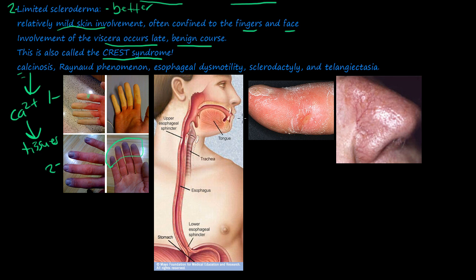E stands for esophageal dysmotility. The esophagus runs posterior to the trachea, comes all the way down, and drops into the stomach, with an upper esophageal sphincter (UES) and lower esophageal sphincter (LES). You get a kind of calcinosis with the esophagus, so you have a hard time eating and swallowing — called dysphagia or difficulty swallowing. This can happen in CREST syndrome.